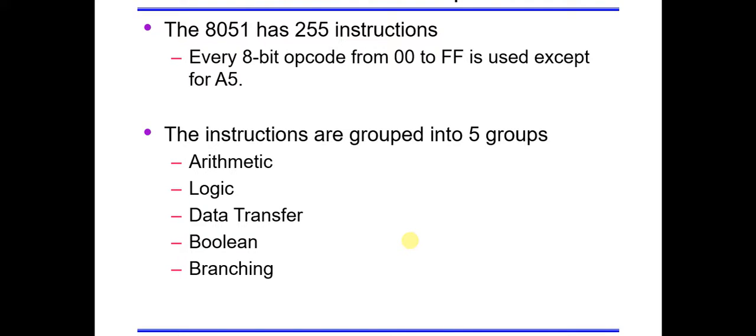Basically there are 255 instructions in 8051, and these instructions are grouped into 5 groups. The groups are arithmetic, logic, data transfer, boolean, and branching.